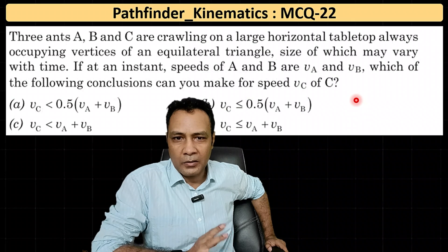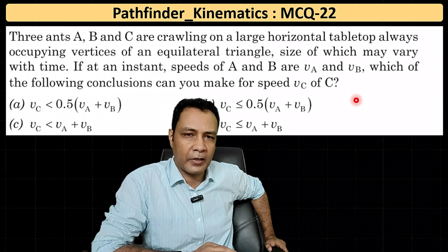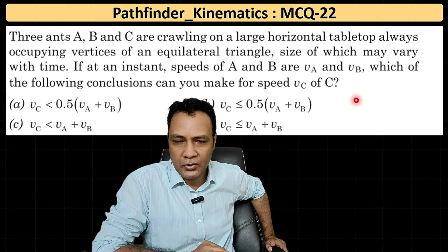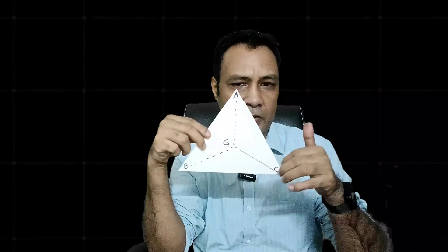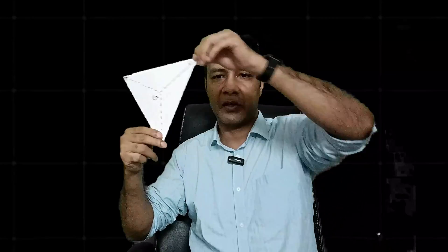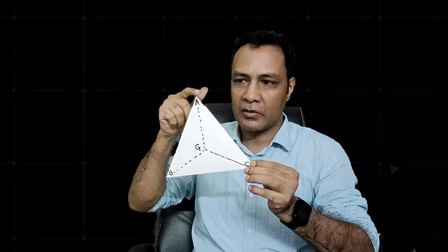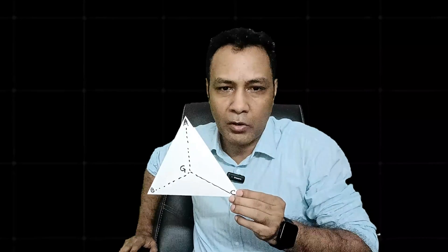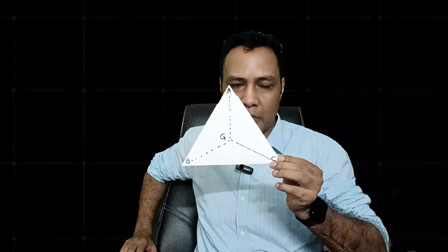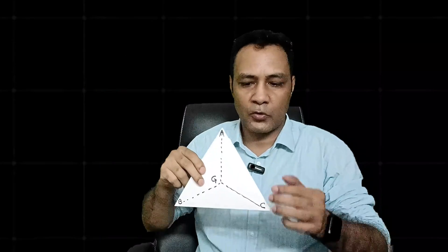One thing is clear: they all lie on the same plane, and the only constraint is that the ants always lie at the vertices of an equilateral triangle whose size may vary. So suppose this is an equilateral triangle and these three are the ants. The most general motion in the plane would be a kind of CTRM — and while doing this, the equilateral triangle at whose vertices the ants sit may shrink or expand.